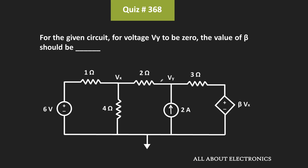Hey friends, welcome to the YouTube channel All About Electronics. In this question, we have been given a circuit and for the given circuit, for this voltage Vy to be zero, we have been asked to find the value of β.